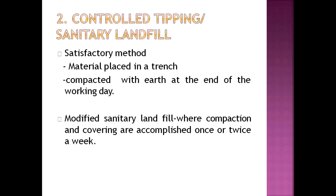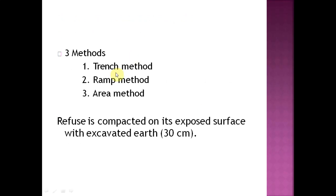The next method is controlled tipping, also known as sanitary landfill. It is a more satisfactory method compared to dumping because the waste is covered with compacted earth at the end of each working day. This eliminates the problems of dumping — no nuisance smell, no chance of waste flying into water. There are three methods: trench method, ramp method, and area method. The refuse is compacted and covered with 30 centimeters of excavated earth on a regular interval.